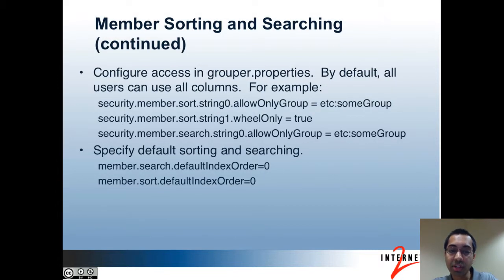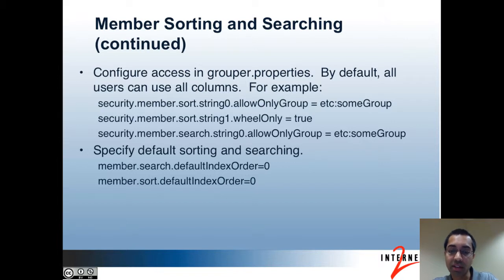You can configure which users can access which sort and search column using configuration in the grouper.properties file. By default, all users can access all columns. Here's an example of how you can limit that: the first example limits access to sort column 0 to members of the group at c:some_group; the second limits access to sort column 1 to wheel members; and the third limits access to search column 0 to members of the group at c:some_group.